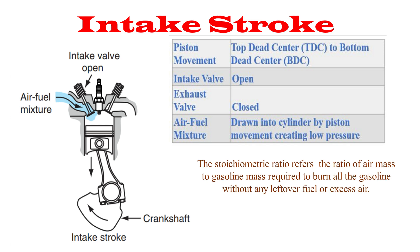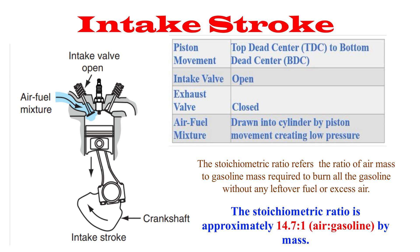The ideal mixture, called stoichiometric, for the combined purposes of engine performance, emission control, and fuel economy, is about 14.7:1 at sea level. Older vehicles had carburetors, and newer vehicles manufactured since the mid-1980s have fuel injection systems with computer controls. The computer monitors the oxygen content in the vehicle's exhaust and then adjusts the fuel supply to provide the correct amount of fuel and air for each intake stroke.